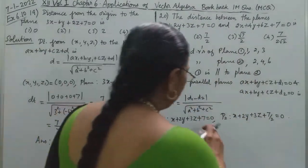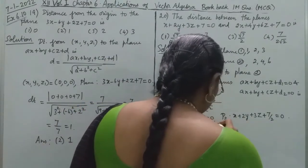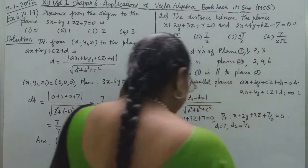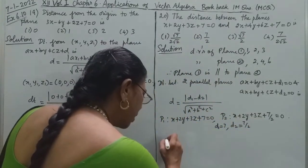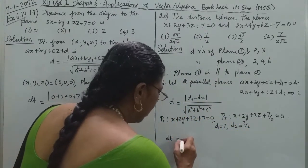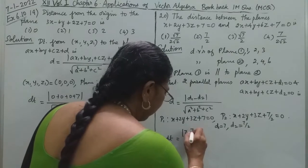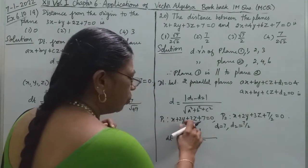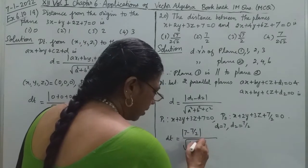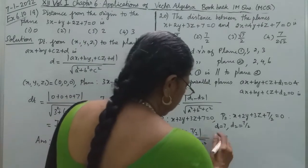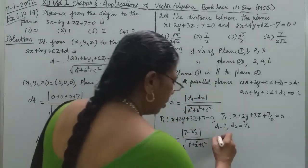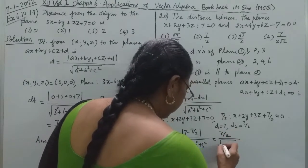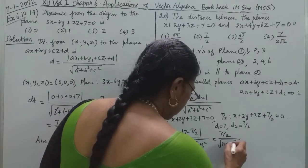So, if we look at the formula, D1 is 7 and D2 is 7 by 2. So, the required distance between them will be modulus of 7 minus 7 by 2, divided by the square root of 1 squared plus 2 squared plus 3 squared — that is the sum of the squares. So, 7 minus 7 by 2 is 7 by 2, and the denominator is the square root of 1 plus 4 plus 9.